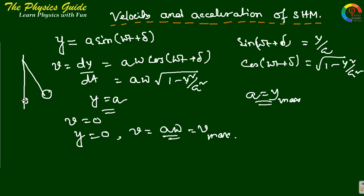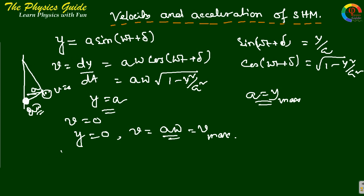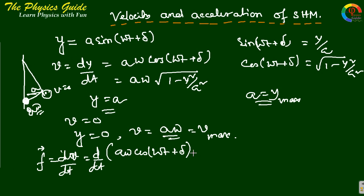When the pendulum starts from this origin position and it comes to y = a, the velocity is zero. When it comes back to the origin, the velocity is maximum, that is aω. Similarly, we can find the acceleration, which equals dv/dt.